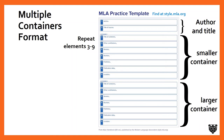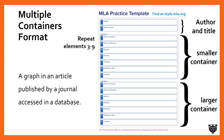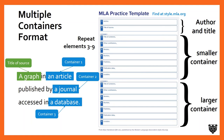Here's a common example expanded from the previous slide: a graph in an article published by a journal accessed in a database. In this example, the graph is the title of the work, the article is the first container, the journal is the second container, and the database is the third container.